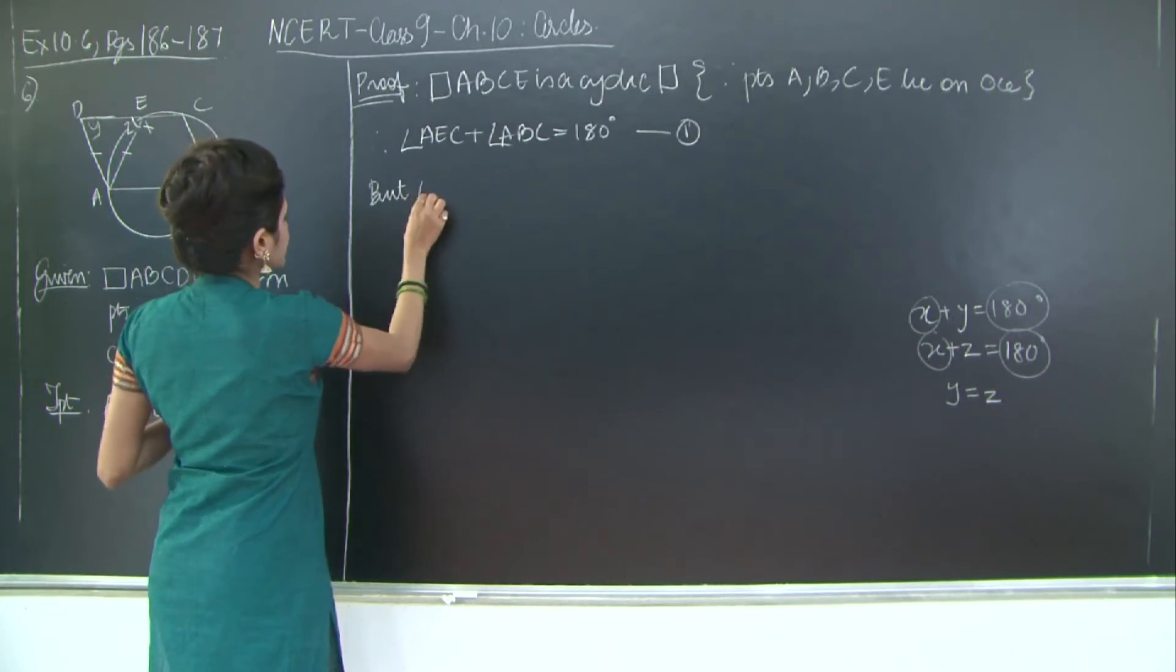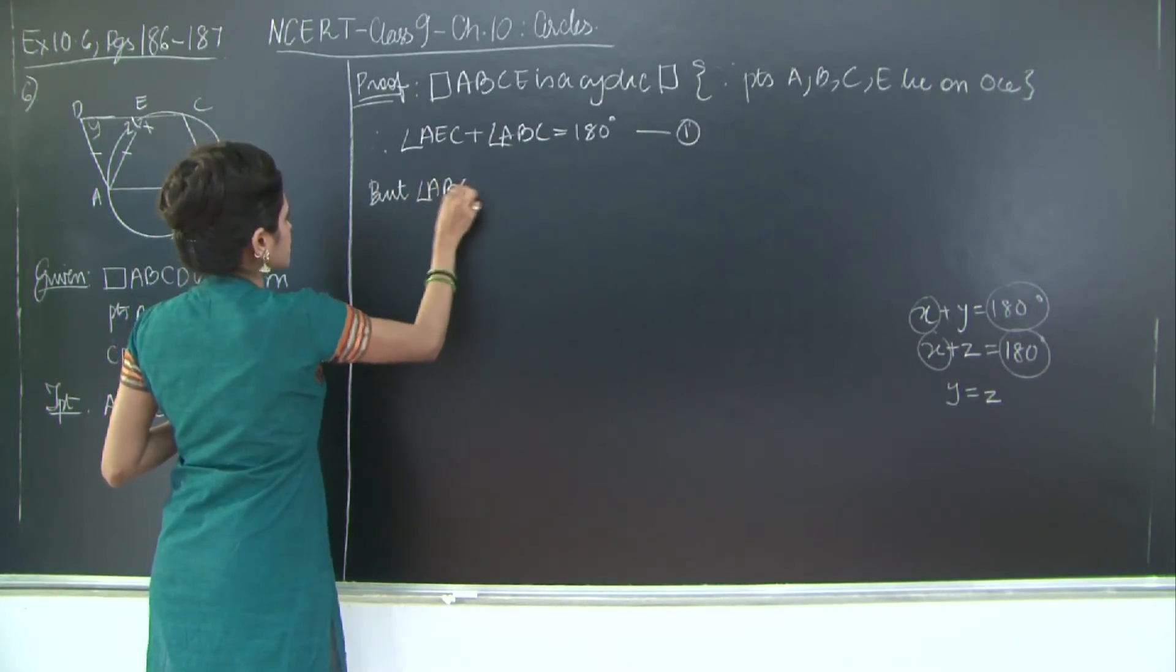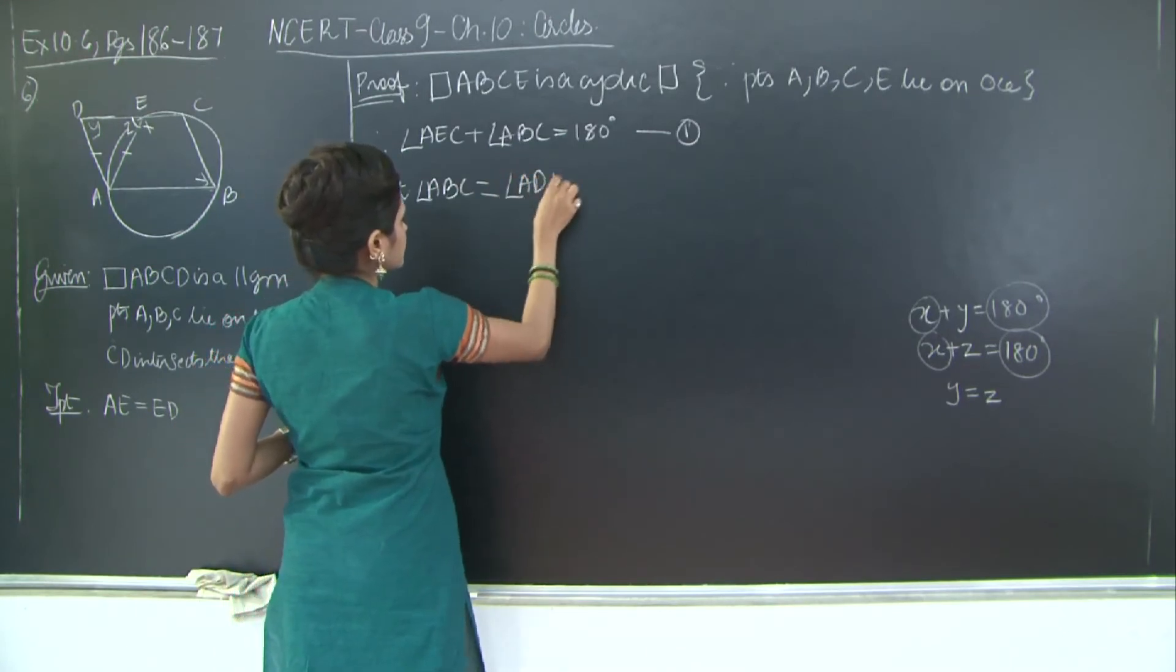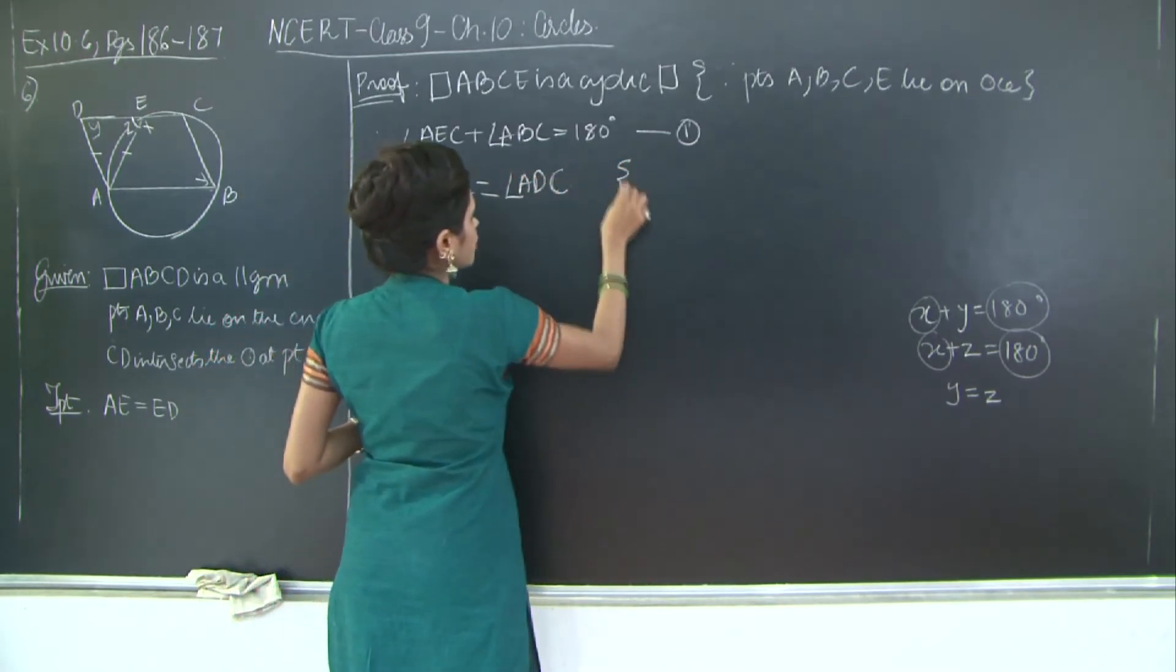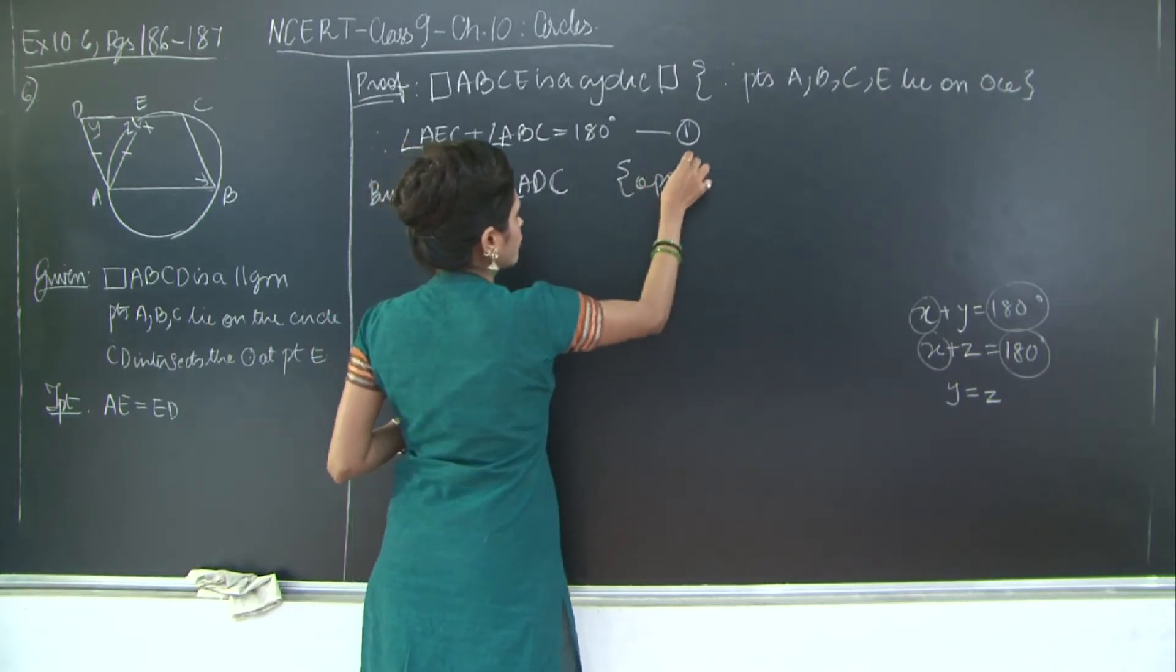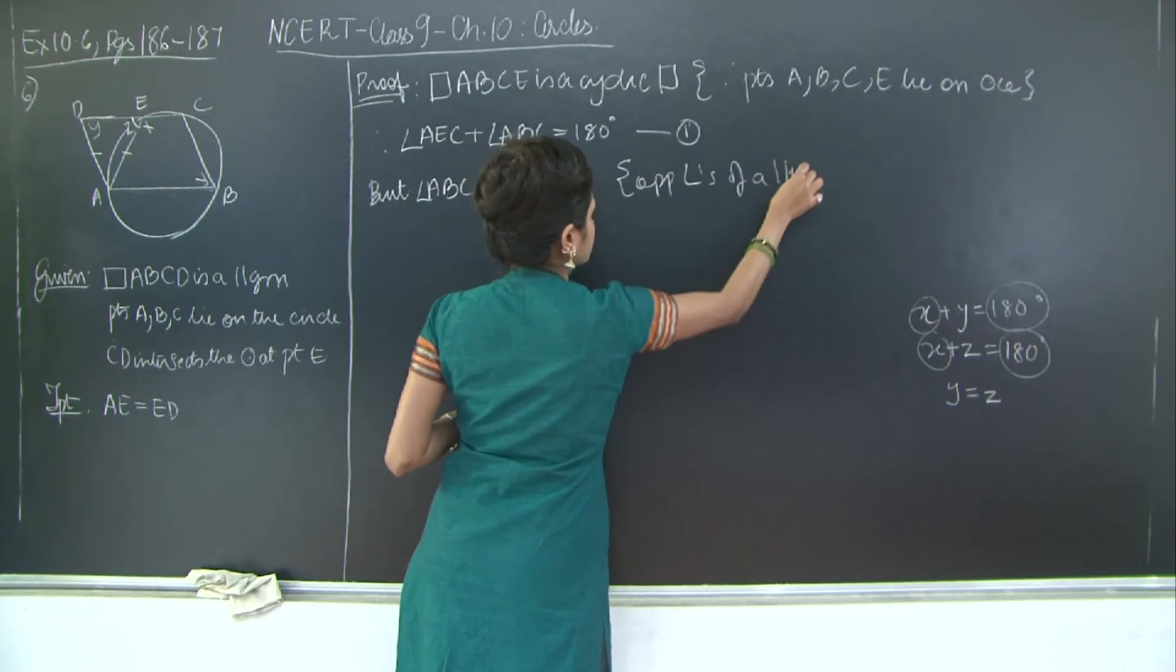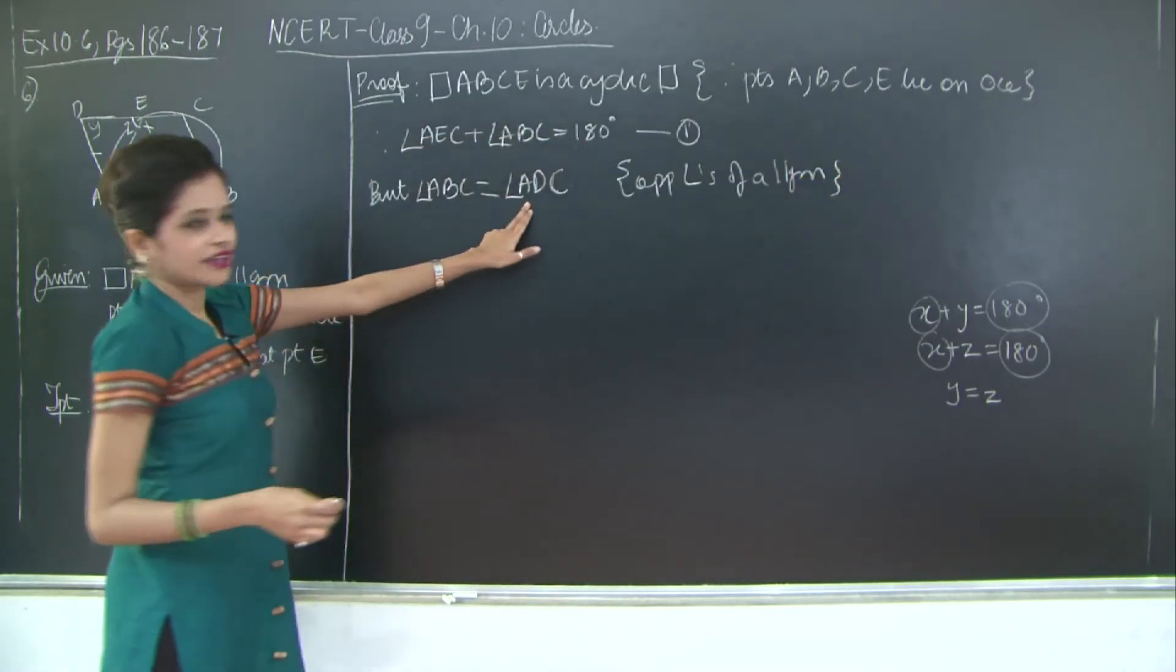But angle ABC is equal to angle ADC. Why? Because they are opposite angles of a parallelogram.